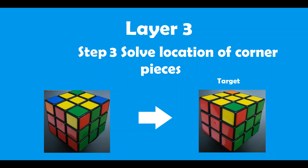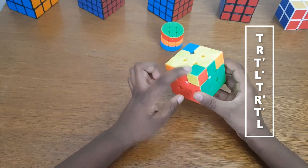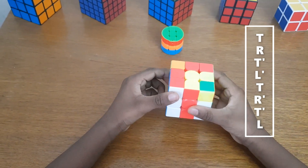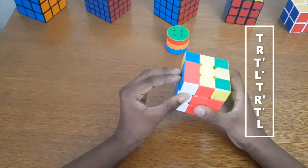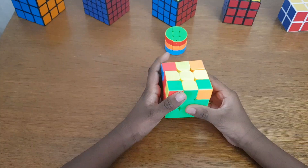In this step, we will move the corner pieces to their correct location. Do not worry about the orientation now. During this step, one or more pieces can be in the wrong location. If all the pieces are correctly located, then skip this step and go to the last step. In my case, I have one piece in the correct location. Keep the correct piece in the top right position and follow these rotations: top clockwise, right clockwise, top counter-clockwise, left counter-clockwise, top clockwise, right counter-clockwise, top counter-clockwise, left clockwise. You can see all the corner pieces are correct in location. Sometimes you may need to repeat these rotations.